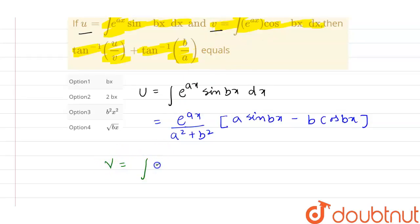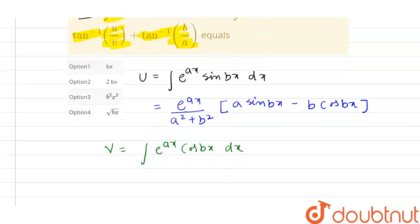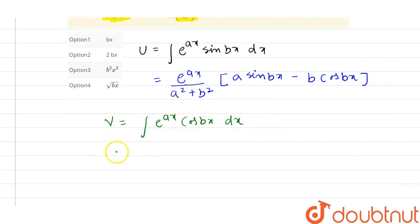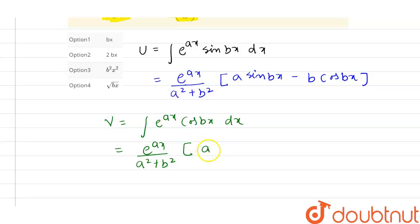Now we have the formula for v also: v equals the integration of e raised to power ax cos(bx) dx, which equals e raised to power ax upon (a squared plus b squared), into a cos(bx) plus b sin(bx).